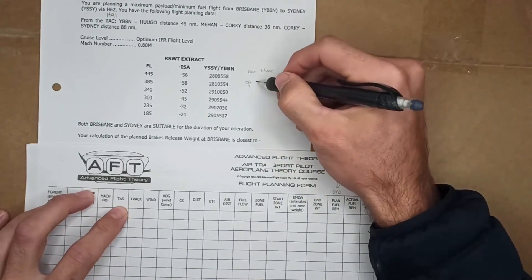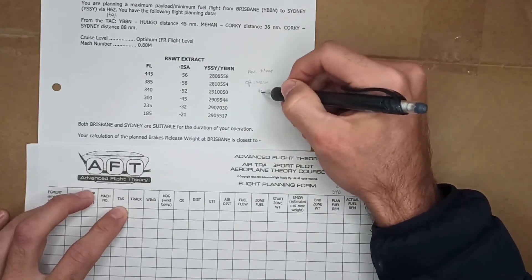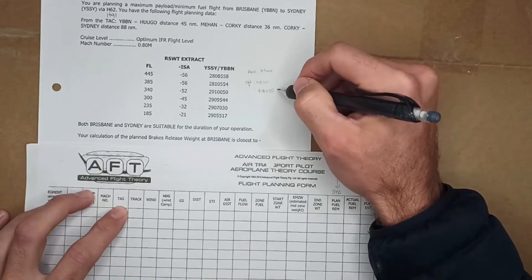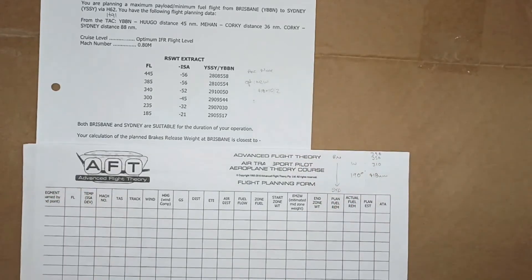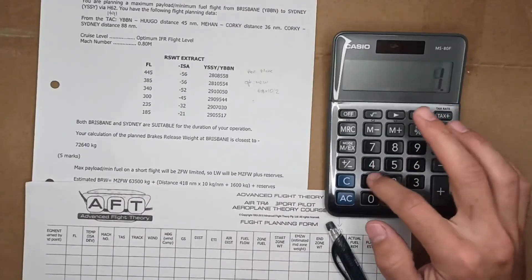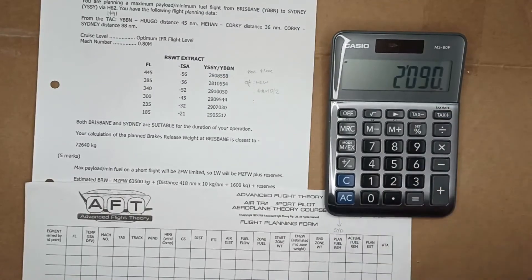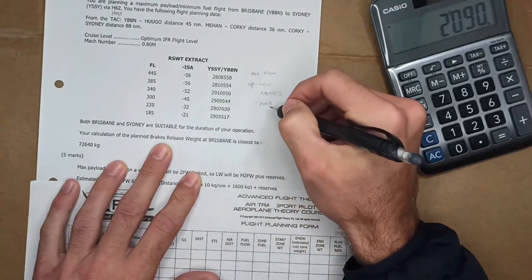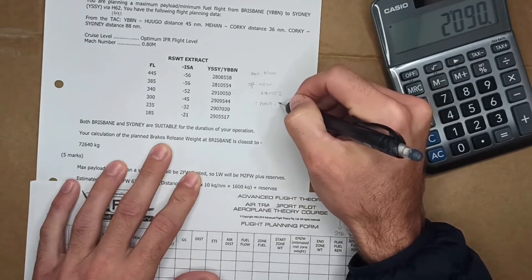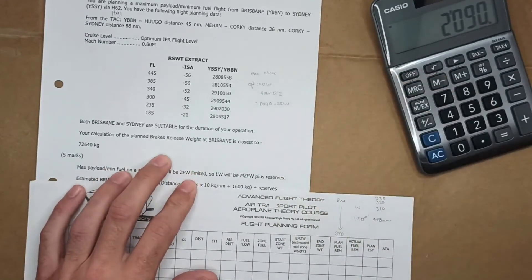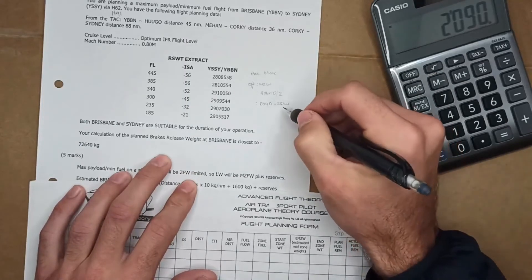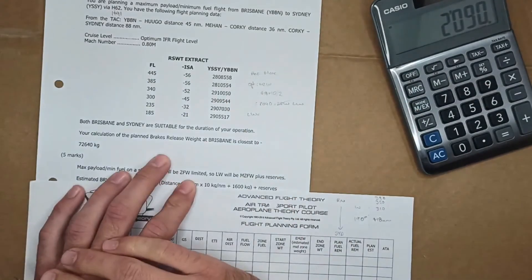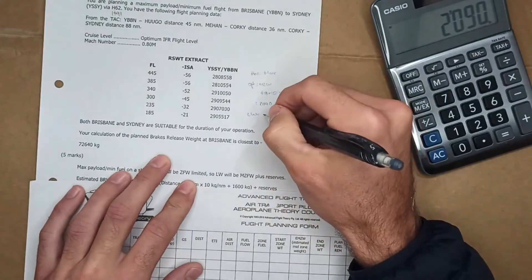The calculations that you should know are the rec max and the optimum. I do it the AFT way. We're going optimum, we know that's mid zone weight. So what I'll do is just go 418 times 10, which is your specific fuel ground nautical mile coverage, divided by 2 to get your mid zone weight. So we should get 418 times 10 divided by 2 equals 2090. We're going to add that 2090 to our landing weight.